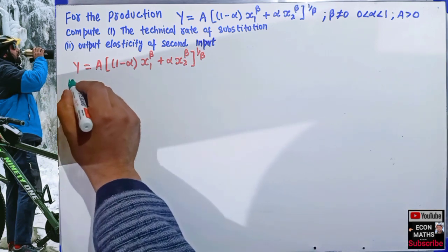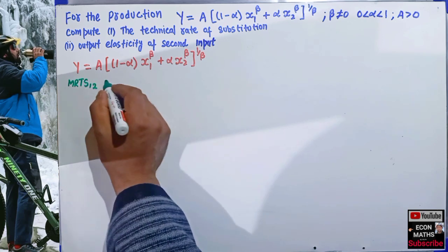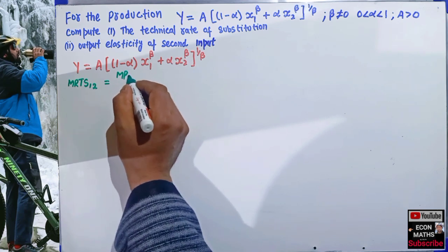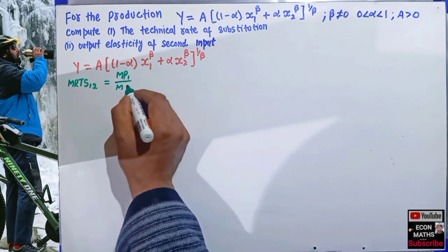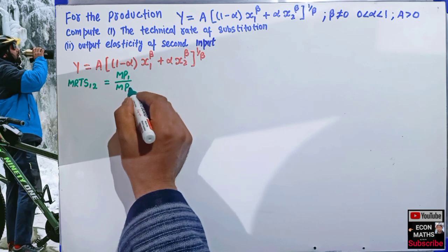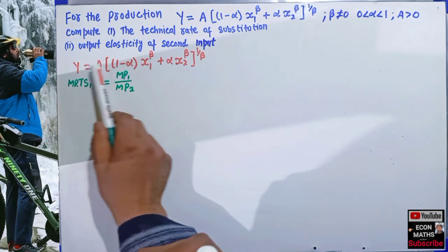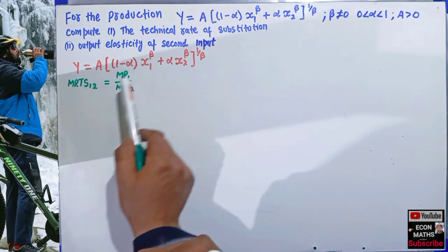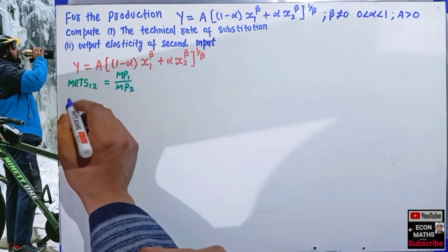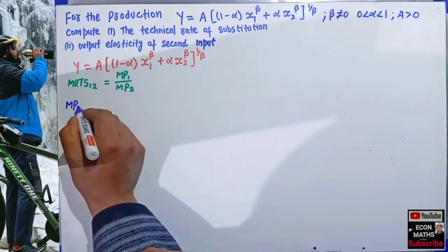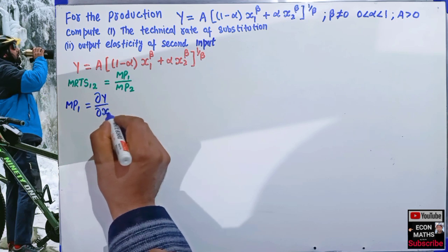The marginal rate of technical substitution between inputs x1 and x2 is given by MP1 over MP2, where MP1 denotes the marginal product with respect to input 1 and MP2 denotes the marginal product with respect to input 2. The marginal product of input 1 (MP1) is the partial derivative of the production function with respect to x1.